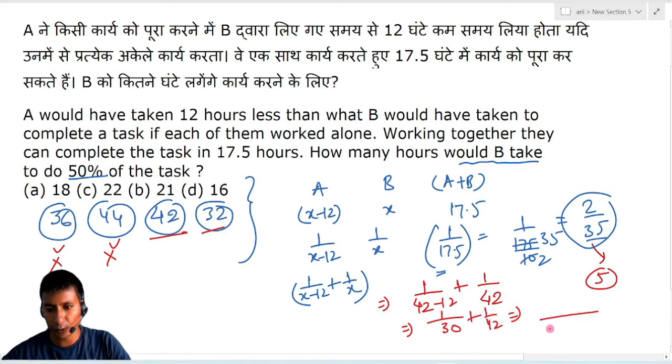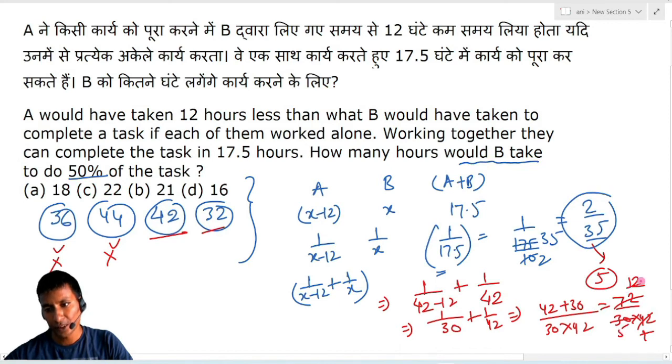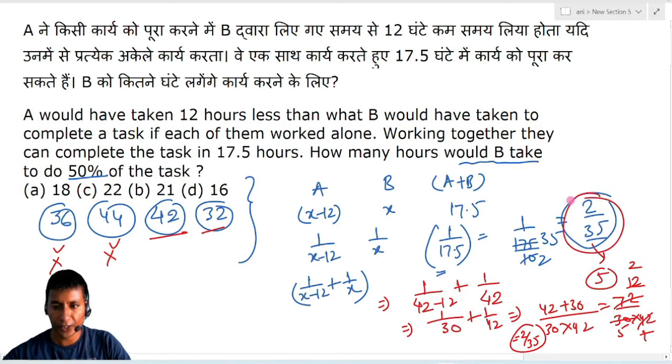Now, when you add, this value will be 30 into 42, and this will be 42 plus 30, that implies 72 divided by 30 into 42. Dividing by 6, this becomes 12, and 6 times 7, 6 times 5, and 6 times 2, ultimately you get 2 by 35, which you needed here.